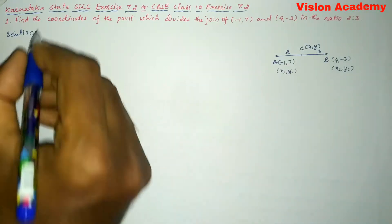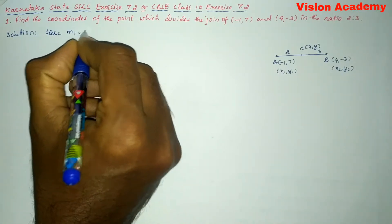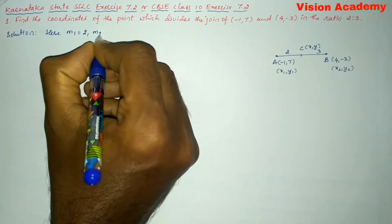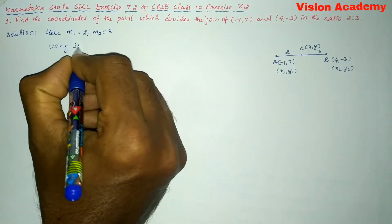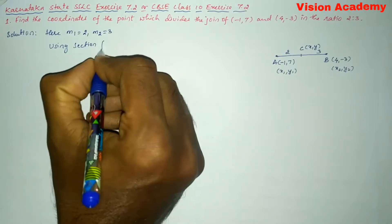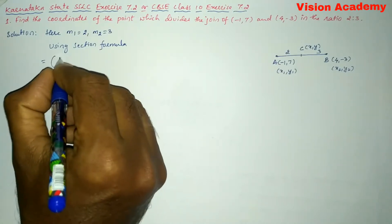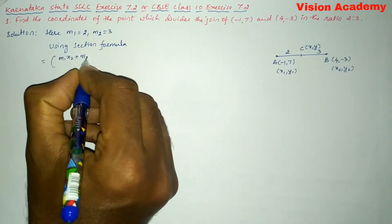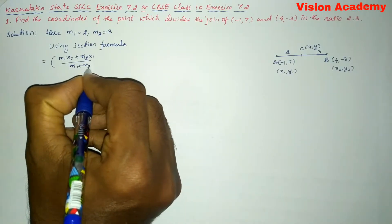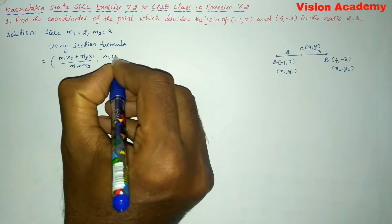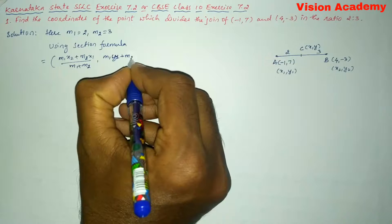Now, let us write here M1 = 2, M2 = 3 using section formula. You can write (M1·X2 + M2·X1)/(M1 + M2), (M1·Y2 + M2·Y1)/(M1 + M2).